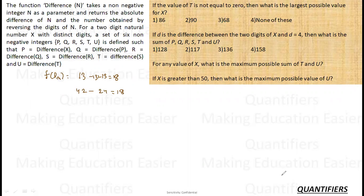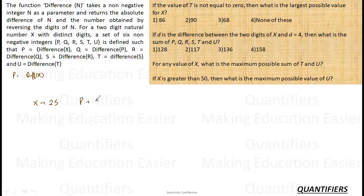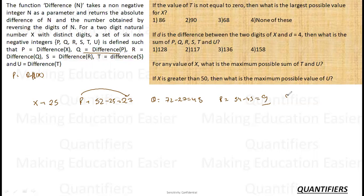For a two-digit natural number x with distinct digits, a set of six non-negative integers {p, q, r, s, t, u} is defined. P is the difference of x — that is, difference(x). Q is the difference of p, r is the difference of q, and so on. For example, if x is 25, then p = 52 minus 25 = 27. Then q = 72 minus 27 = 45. R = 54 minus 45 = 9. S would be 0 since it's a single digit. T and u are also 0.